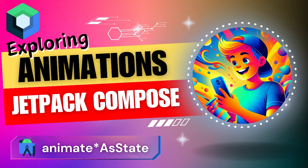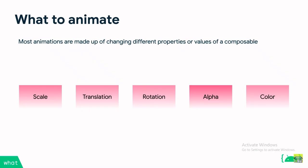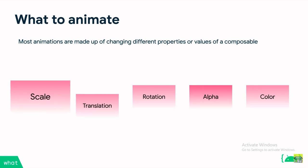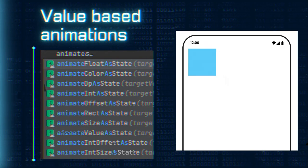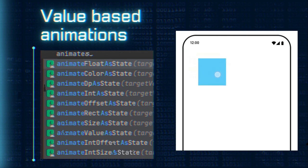Hello guys, welcome to another exciting exploration in the world of Jetpack Compose. Today we are diving deep into the powerful AnimateAsState built-in animation composables. These functions are a set of built-in animation utilities that make it easy to animate various properties in a Compose UI, and are commonly used to create dynamic and engaging user interfaces. Let's open Android Studio and animate some values.